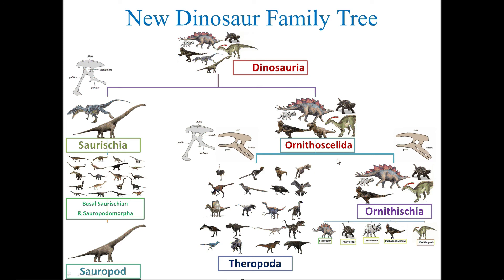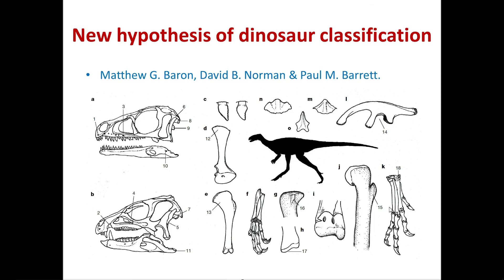The clade Ornithoscalida includes Theropods and Ornithischians. In the earlier classification, Theropoda was a sister clade to sauropods under Saurischia, but now sauropods and Ornithoscalida become sister clades. Theropoda is no longer the sister clade of sauropods; rather it is the sister clade of Ornithischia. This new clade is supported by 21 synapomorphies — that is, common characters acquired from a common ancestor shared between Theropoda and Ornithischia — giving rise to the new clade Ornithoscalida.